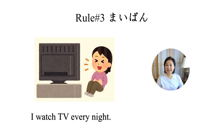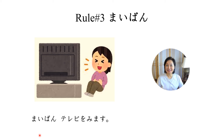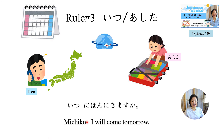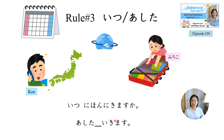Now you know rule number three. Please say this sentence: 'I watch TV every night.' 毎晩テレビを見ます。そうですね。How about these questions? Ken is asking Michiko: 'When will you come to Japan?' いつ日本に来ますか？そうですね。And Michiko says: 'I will come tomorrow.' 明日来ます。そうです。Note: if you are confused with 来ます versus 行きます, I explained these two verbs in episode number 29, so please go back and listen to episode 29.